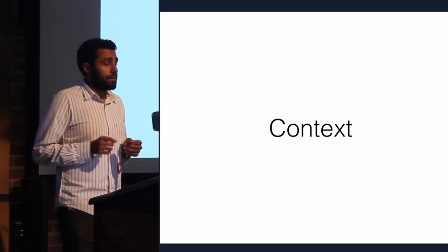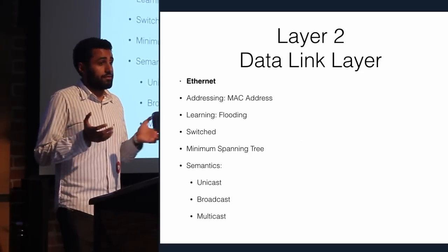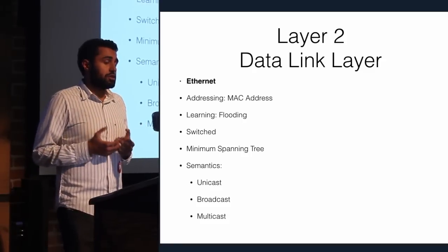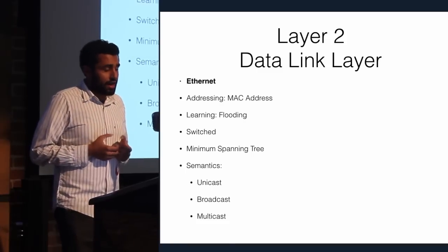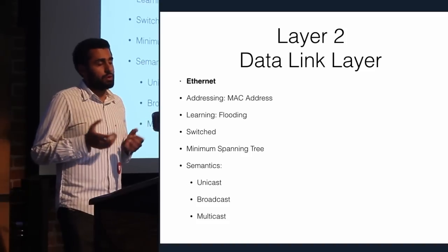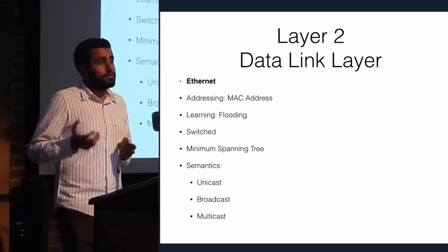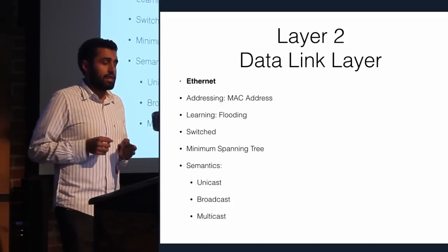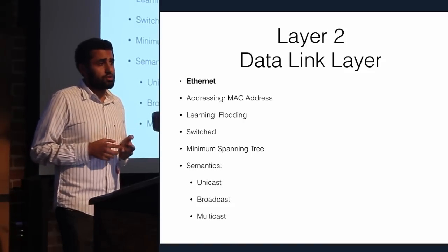Layer two networking used to be ubiquitous inside of data centers. Layer two networking is what most of us call Ethernet, where we all use MAC addresses assigned to physical devices — actually burned into your NIC. As we transitioned to one gigabit networking, we left behind hubs and CSMA/CD and moved into switched networks, which require a minimum spanning tree in order to work. There are three traffic types in layer two networks: unicast, broadcast, and multicast.